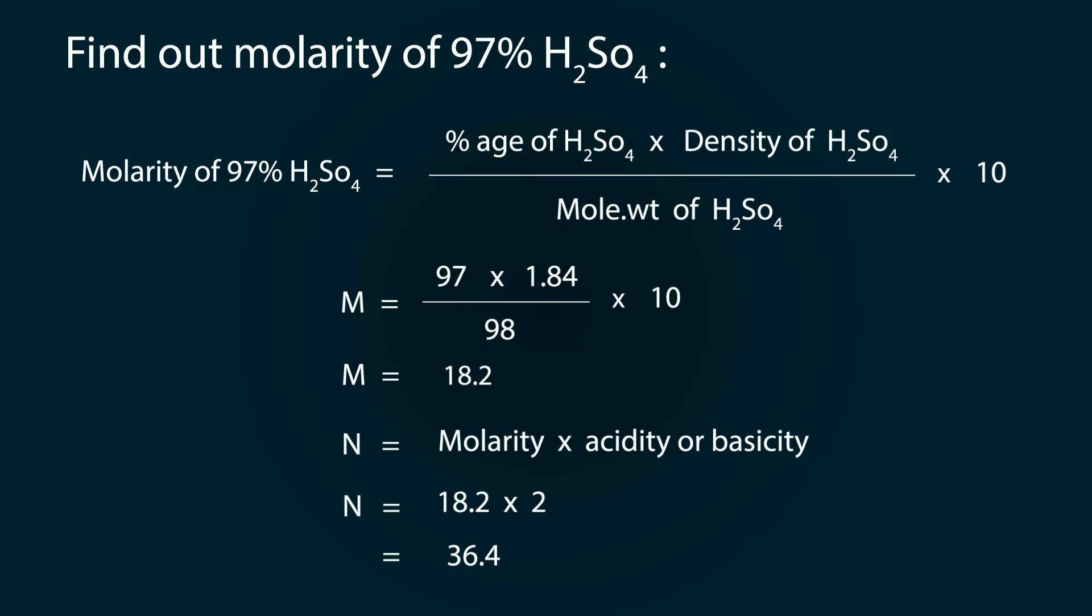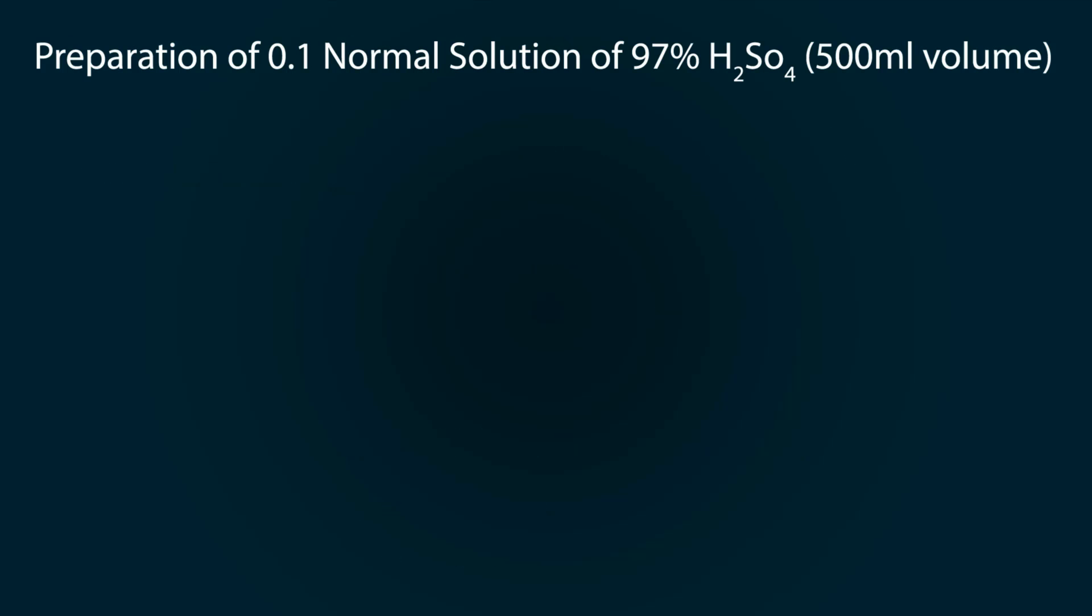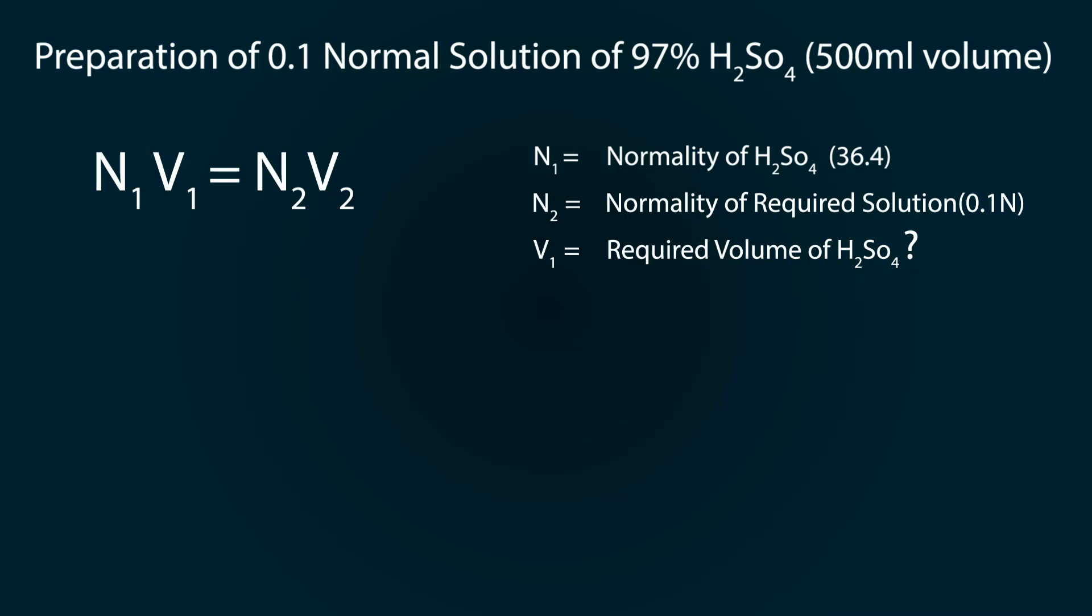Now let's prepare 0.1 normal solution of 97% H2SO4 up to 500 milliliter volume. We'll use the formula N1V1 = N2V2, where N1 is the normality of H2SO4 (36.4), N2 is the normality of required solution (0.1N), V1 is the required volume of H2SO4 to pipette out, and V2 is the final solution volume (500ml).